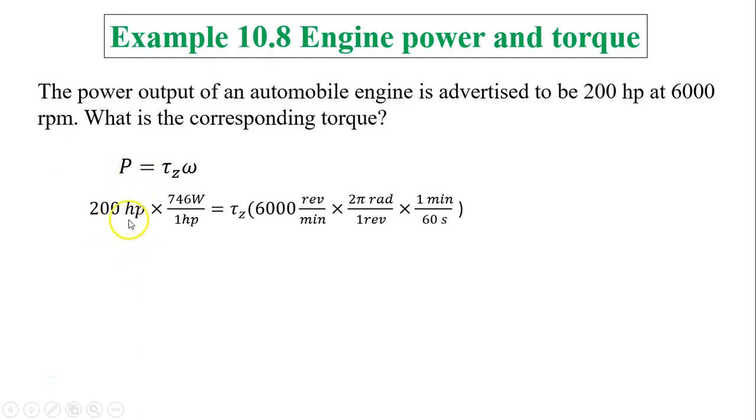So one horsepower is 746 watts. And rpm is revolution per minute. One revolution has 2 pi radians, and one minute has 60 seconds. So minute and minute cancel, revolution and revolution cancel, and you'll have radians per second. So you solve for torque: torque equals 237 newton-meters.